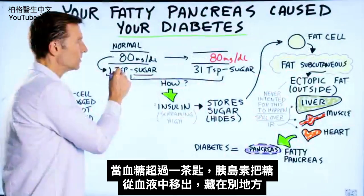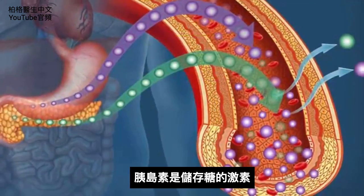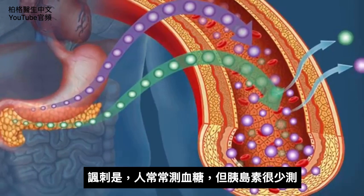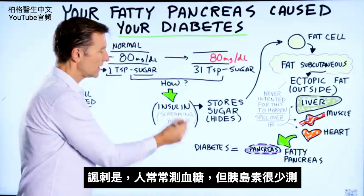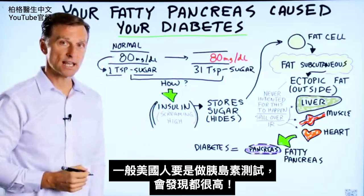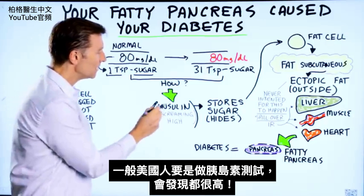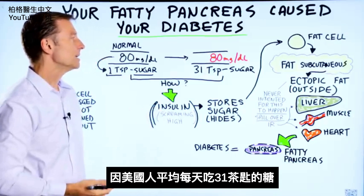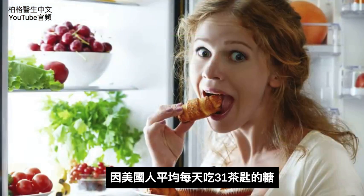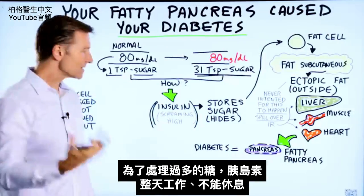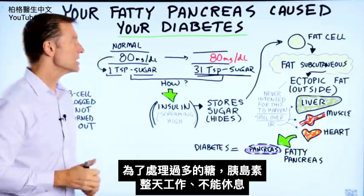Anything more than one teaspoon of sugar in the blood, insulin hides it in other places in the body. It's basically a storage hormone. But what's ironic is that blood sugars are tested, but insulin is rarely tested. If they were to test the average American, they would find it screaming high — because the average person consumes 31 teaspoons of sugar per day, so this hormone is working overtime 24/7.